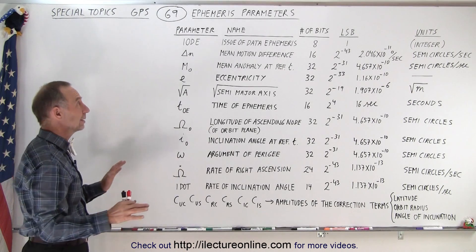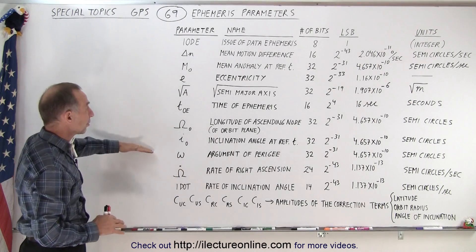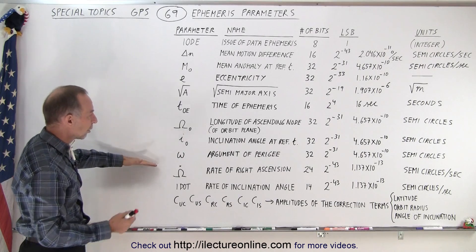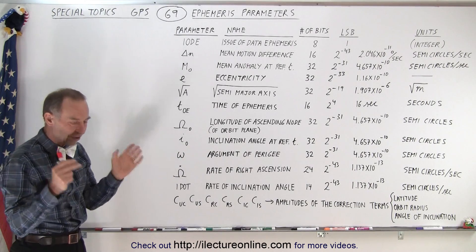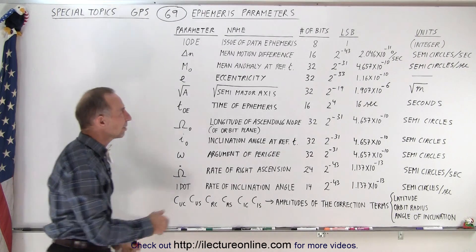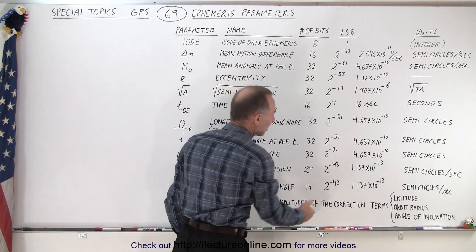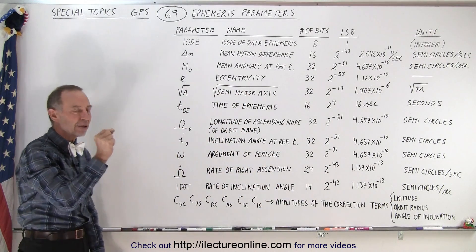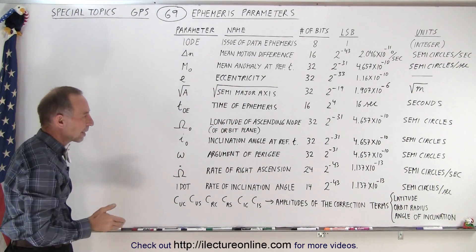Bottom line, these parameters that we've seen before, these are what we call orbital parameters of the ephemeris, which is the very accurate data associated with each satellite. Based upon the LSBs, you can see that it keeps track of minute, minute changes in the various parameters down to very,